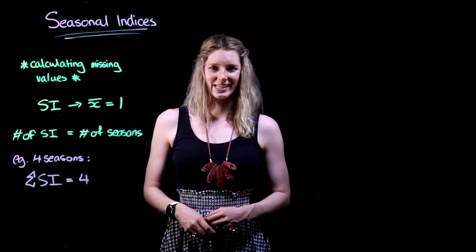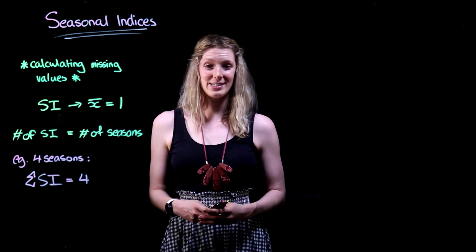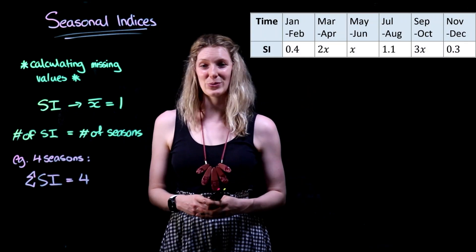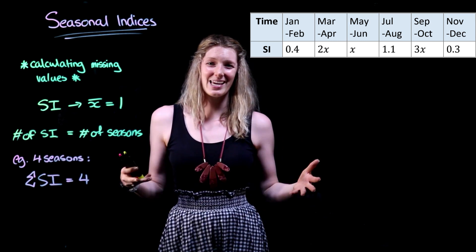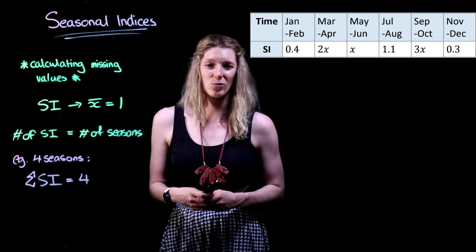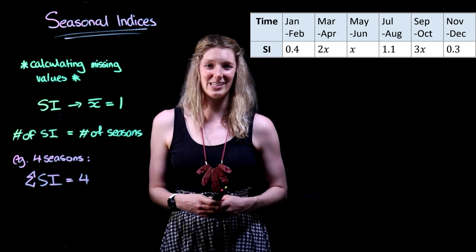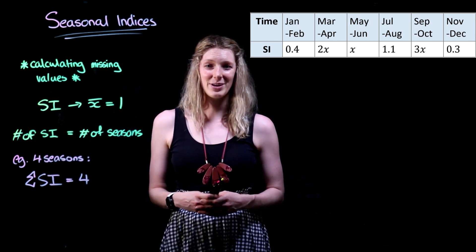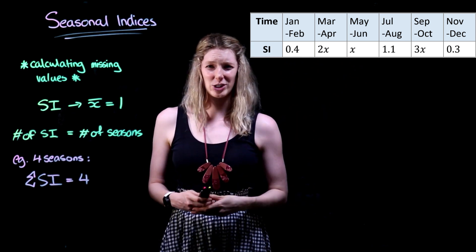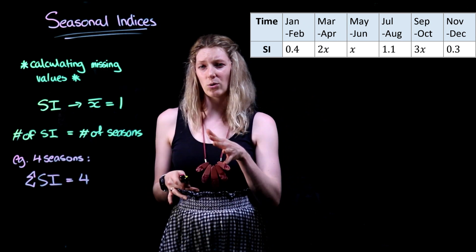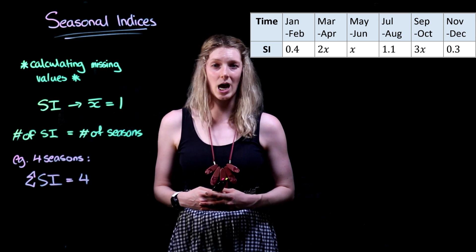Sometimes our missing seasonal index problems are going to be a little bit more involved and have multiple unknown seasonal indices, such as this one here. We've been given six seasons in total, splitting the year into two-month increments, and we can see that in three of these instances we have unknown seasonal indices denoted by 2x, x and 3x. We're going to use all of this information along with the knowledge that all seasonal indices add up to six to help us find our three unknown seasonal indices.